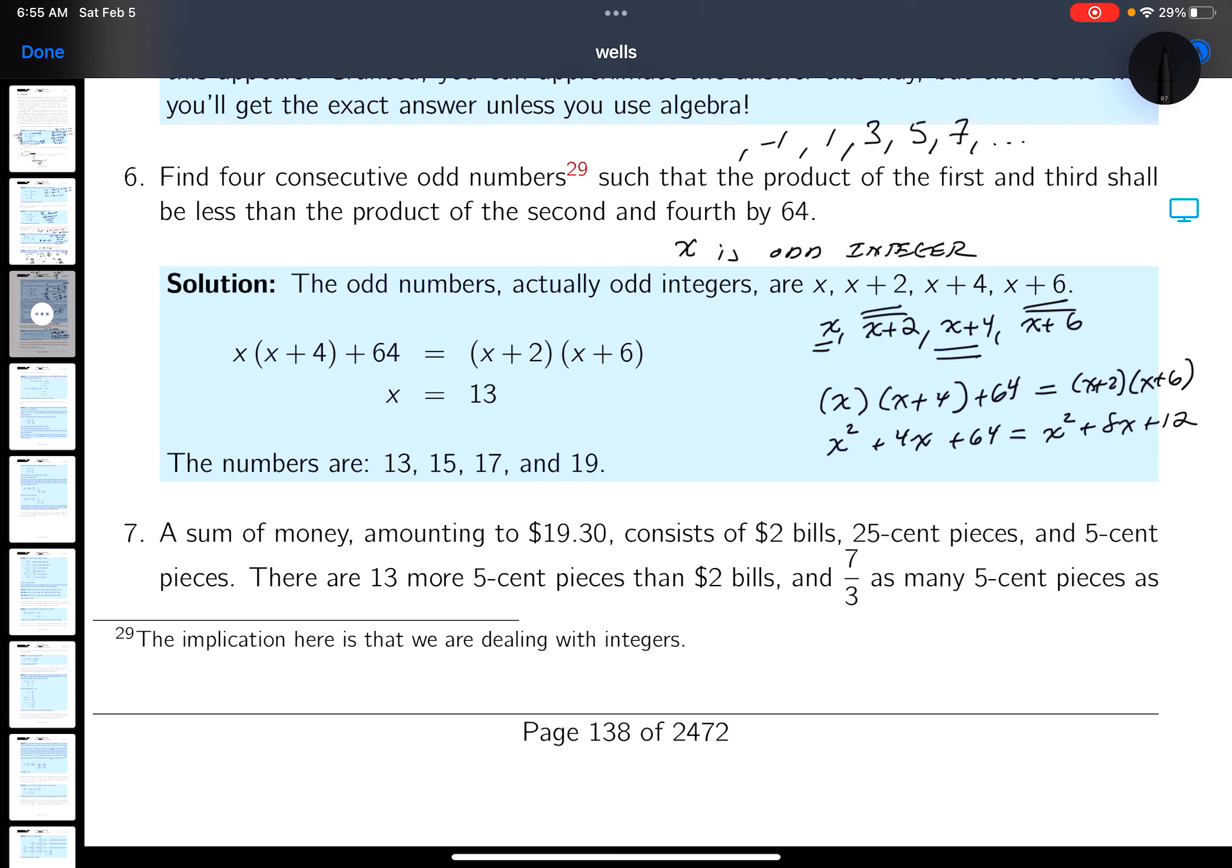You're going to get x squared plus 4x plus 64, and over there, getting a little better multiplication, it's going to be x squared and 6 plus 2 is 8x plus 12. By the way, x is an integer number, I'm expecting this to work out really nicely. Subtract the x squared from both sides, subtract 4x from both sides.